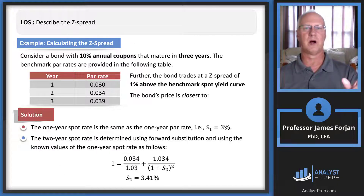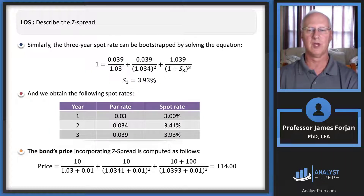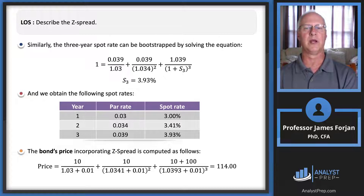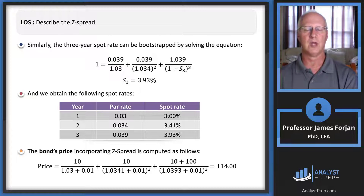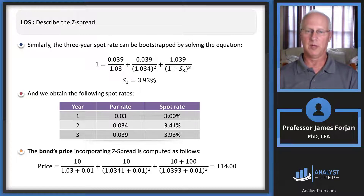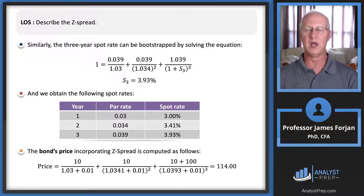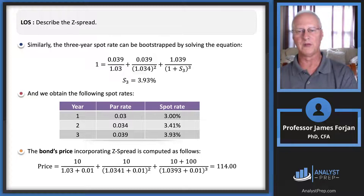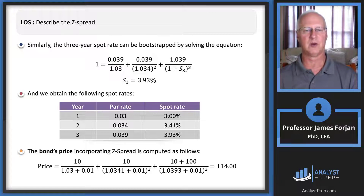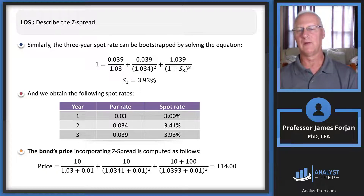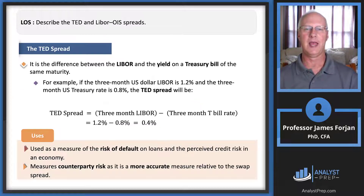Consider a bond with a 10% annual coupon maturing in three years. We discount the cash flows at the spot rate plus the Z-spread: in year one, 10 / (1.03 + 0.01)^1; in year two, 10 / (1.0341 + 0.01)^2; in year three, (10 + 100) / (1.0393 + 0.01)^3. Incorporating the Z-spread of 1% into the denominator gives a bond price of approximately 114.